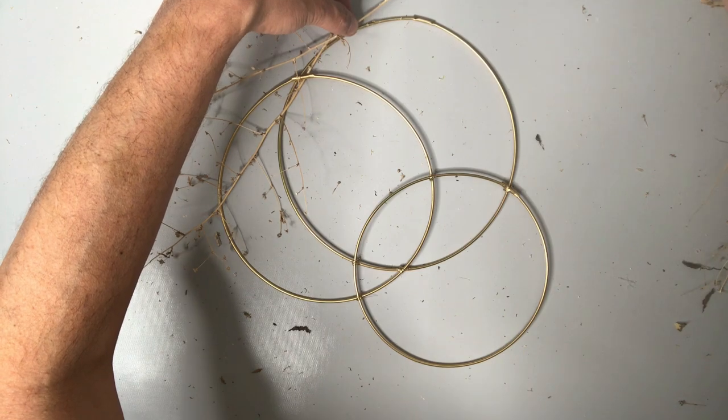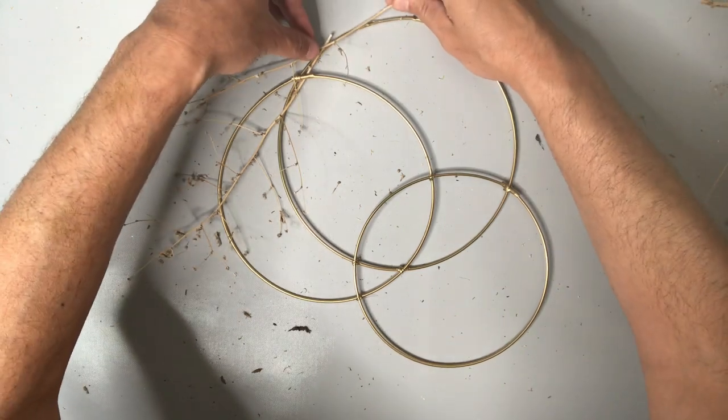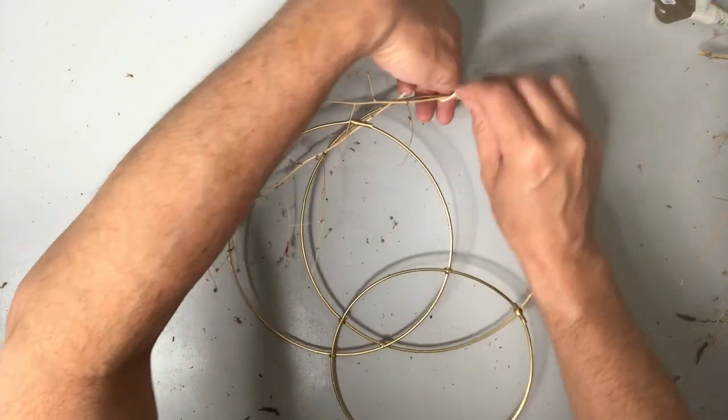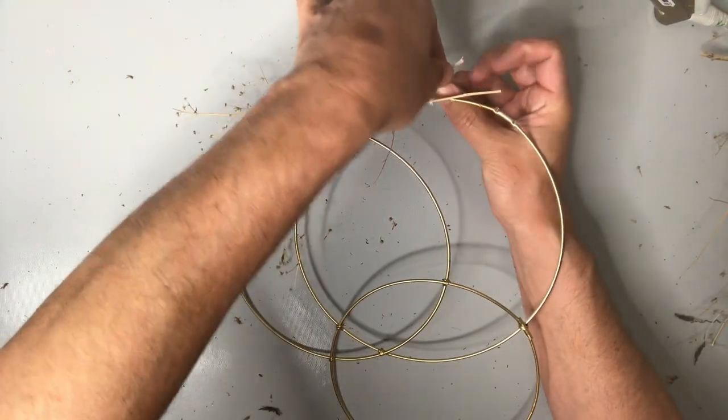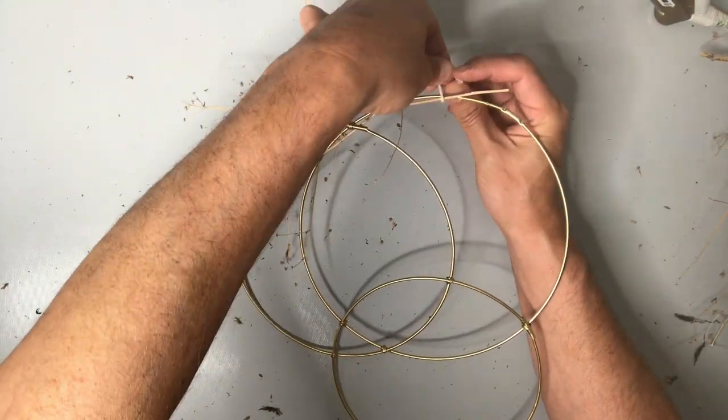I'm gonna use a little bit of hot glue to temporarily hold them in place and then after that I'm going to tie them with a little bit of string. This is just regular string from a roll that I'm going to tie with a double knot on the back of the wreath form.